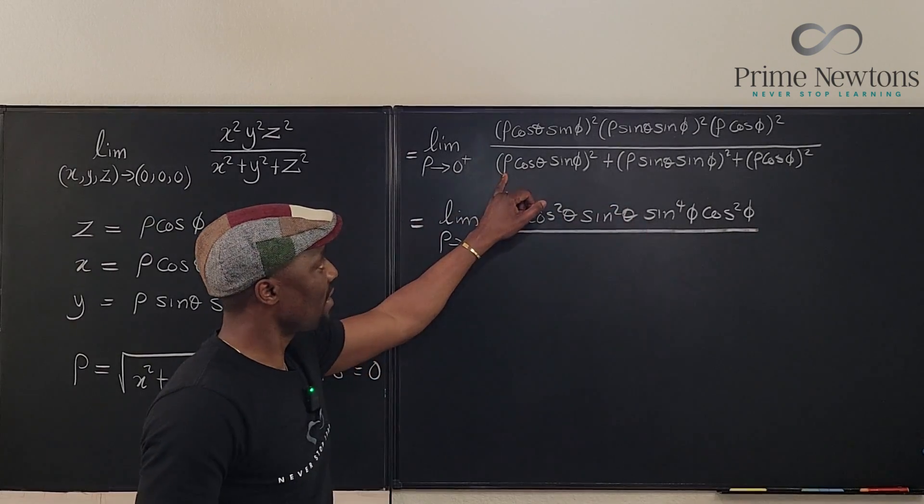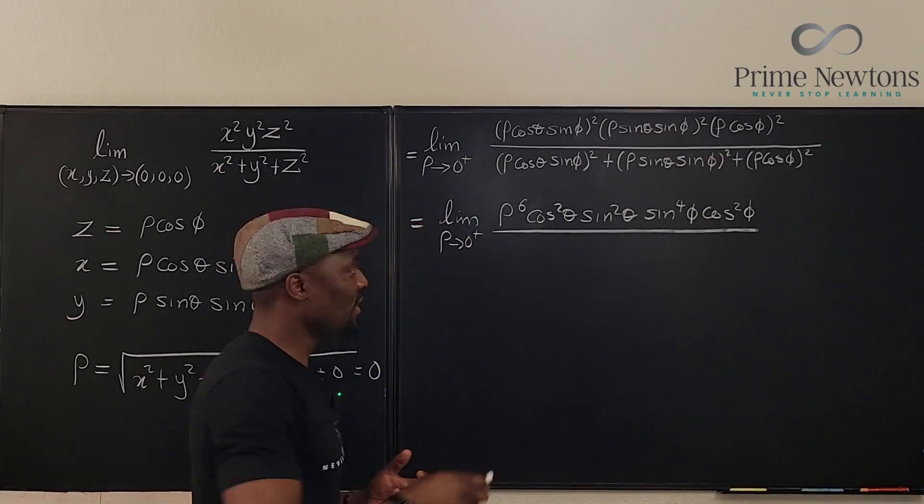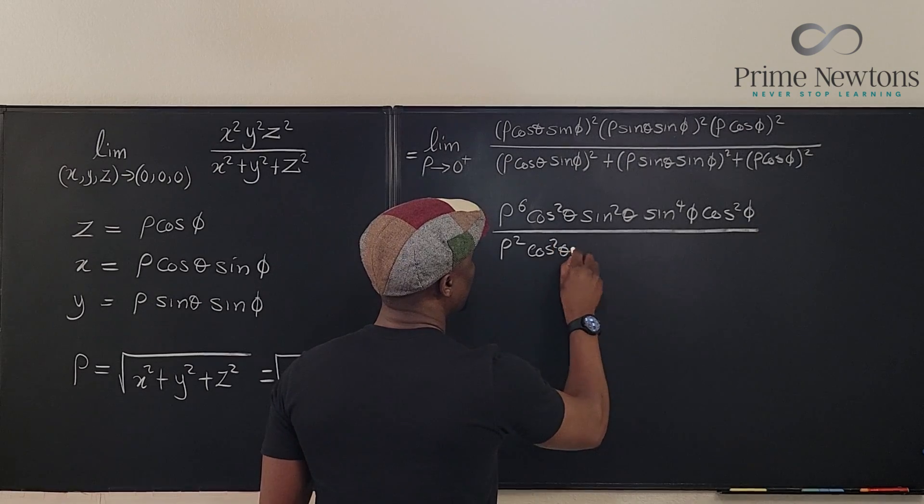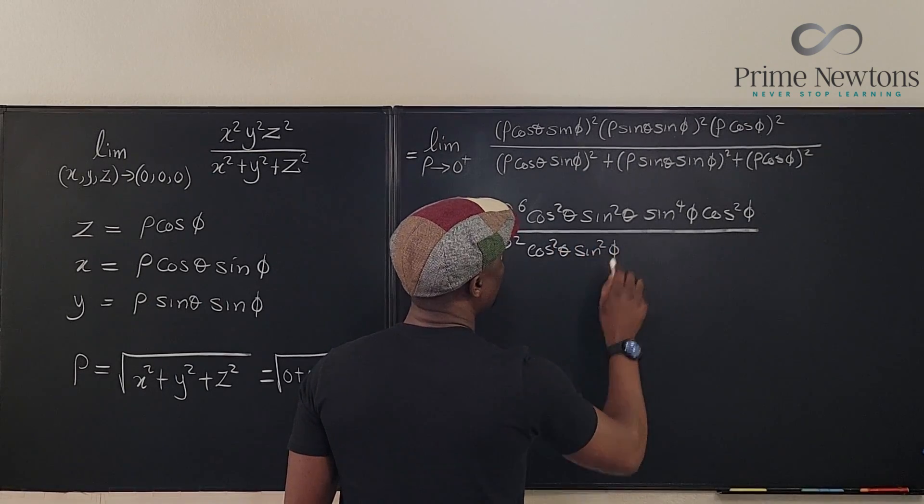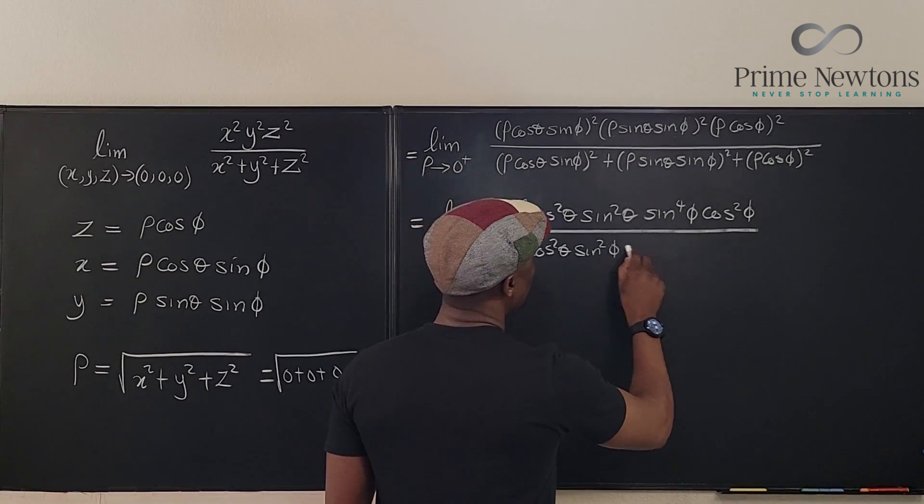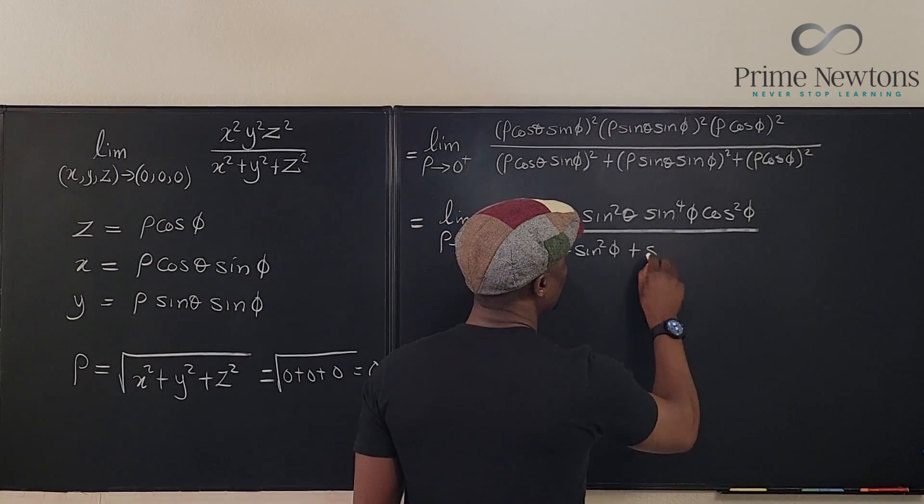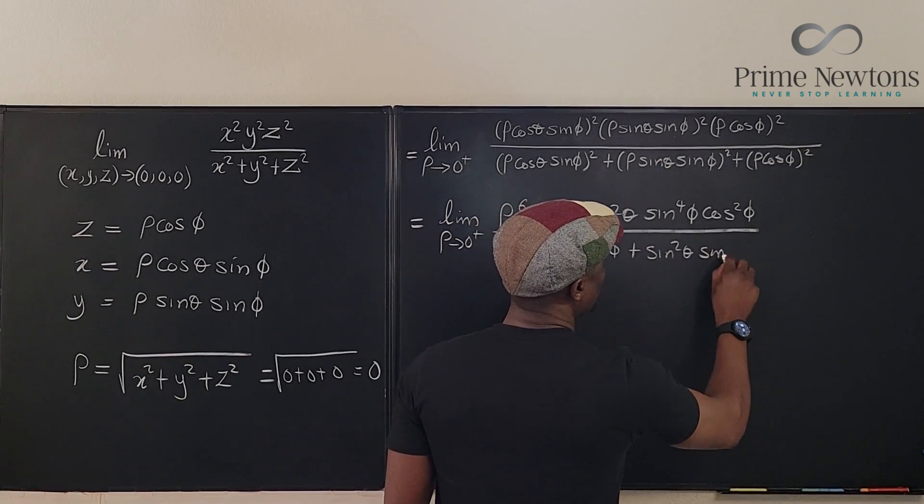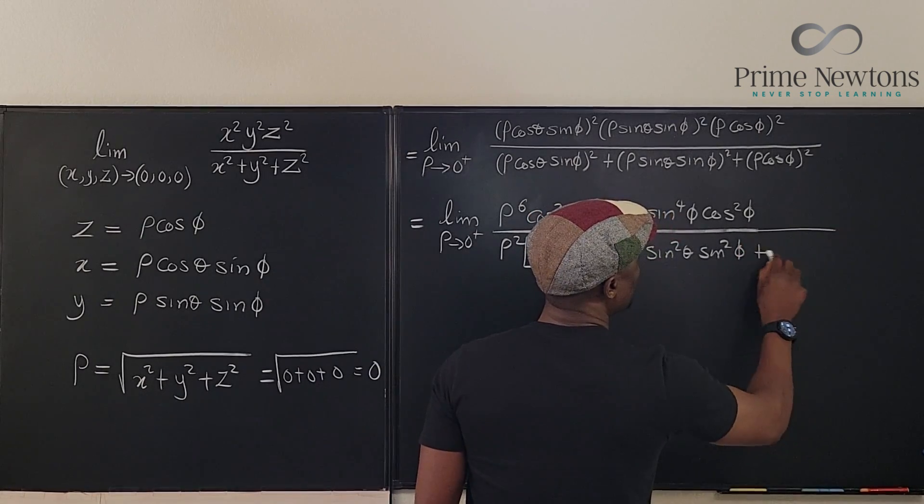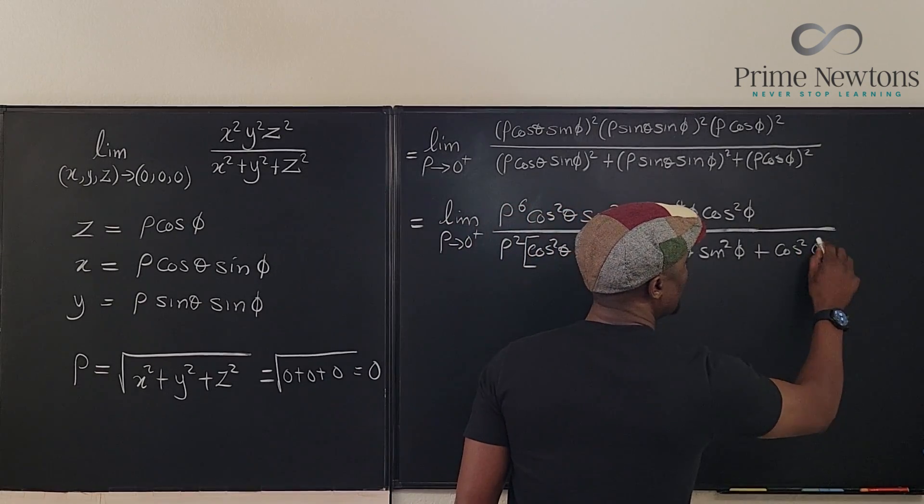In the bottom, we're going to have a square, a square, a square, but because there's a plus between them, we're going to pull out all the rho squareds. So we have this. So this is cosine squared theta, sine squared phi, and then we need to put this in parentheses. We're going to have plus sine squared theta, sine squared phi, and we're going to have plus, this is going to be cosine squared phi.